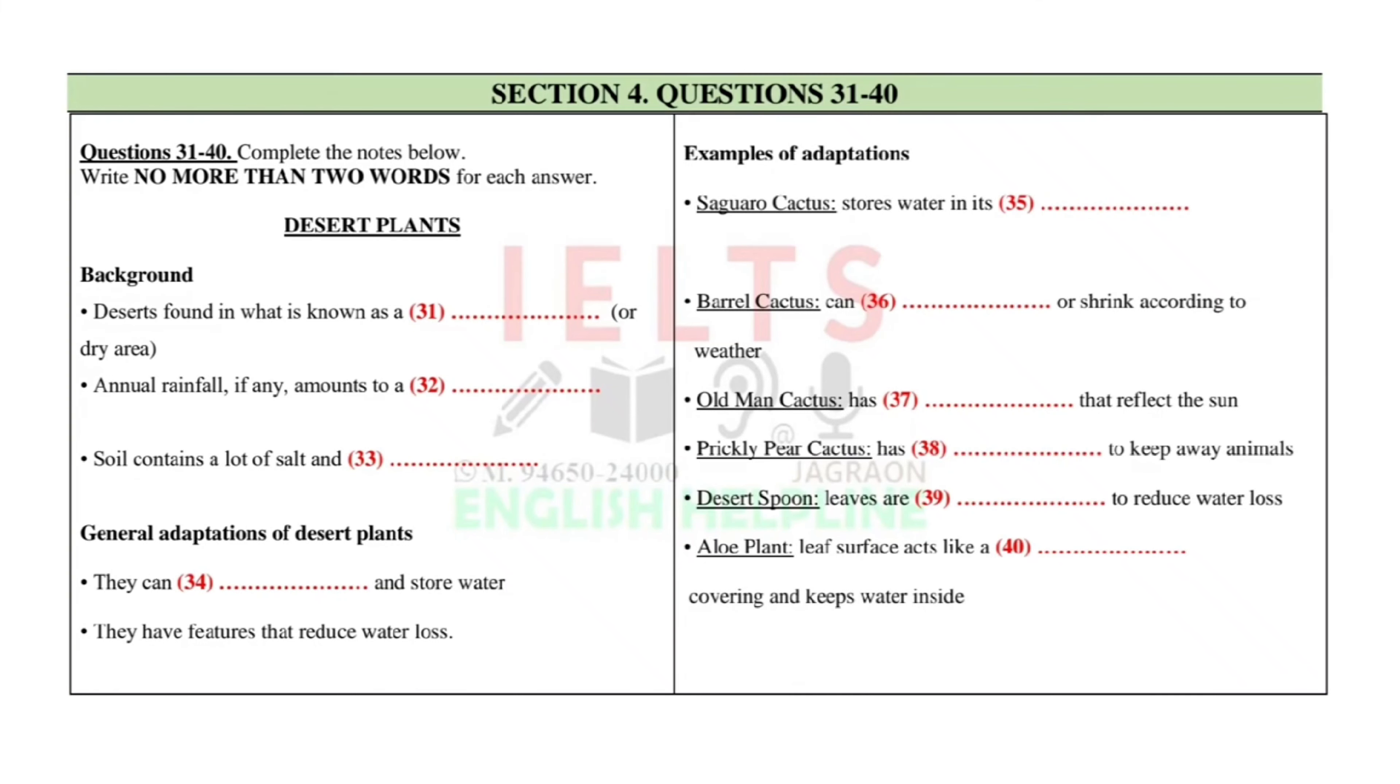This next plant is called the barrel cactus, named because it does look rather like a barrel. It can grow up to a metre in height, which is pretty big, and it has long yellow spines. Now this plant has an interesting adaptation because its shape allows it to expand when it rains, hence the barrel, and store water in its spongy tissue. But then it shrinks in size during dry times as it uses the stored water, so that's a clever design.